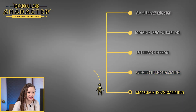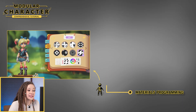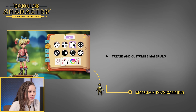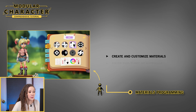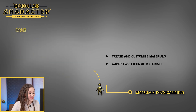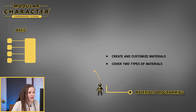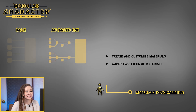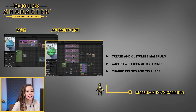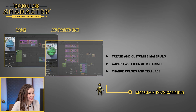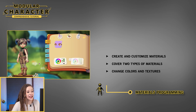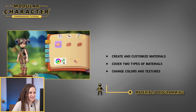Materials programming: we'll create and customize materials that add color and texture to our character. We'll cover two types of materials — basic and more advanced ones. These materials will enable us to change colors and textures on the modular parts, giving our character a unique look.